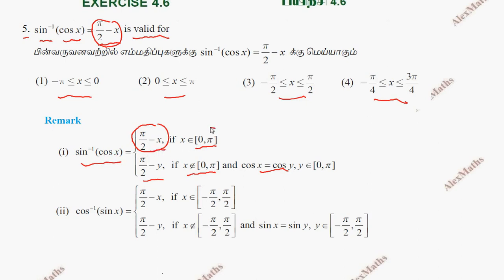When x belongs to 0 to pi — option 2 is the correct answer. That is, 0 less than or equal to x less than or equal to pi. This inequality is valid, so the answer is x ∈ [0, π].